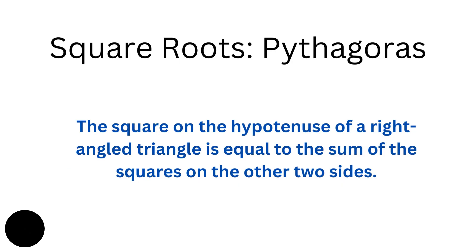So square roots, that is the Pythagoras: the square of the hypotenuse of a right angle triangle is equal to the sum of the squares on the other two sides. So you must remember this theorem.